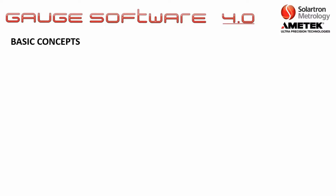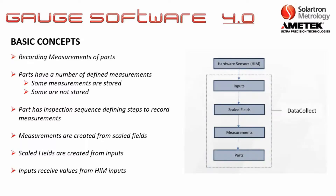Before going into the basic training, let's go through some basic concepts. Gauge Software 4.0 is fundamentally about recording the measurements of parts. Parts have a number of defined measurements — some are stored and some are not. The part has an inspection sequence defining the steps to record those measurements. Those measurements are created from scaled fields, the scaled fields are created from inputs, and the inputs receive values from the hardware interface module. Here is your basic diagram illustrating this.